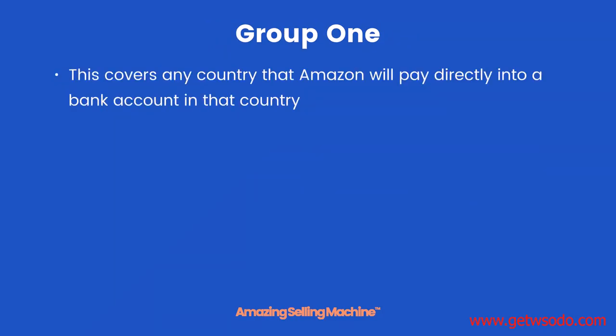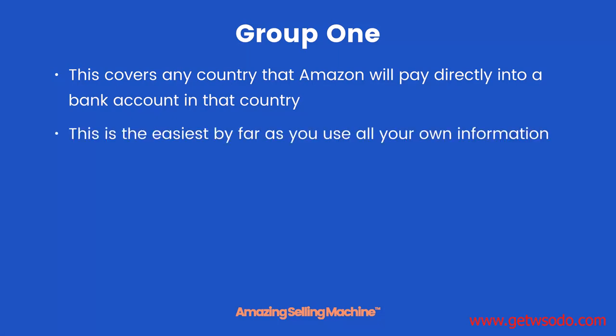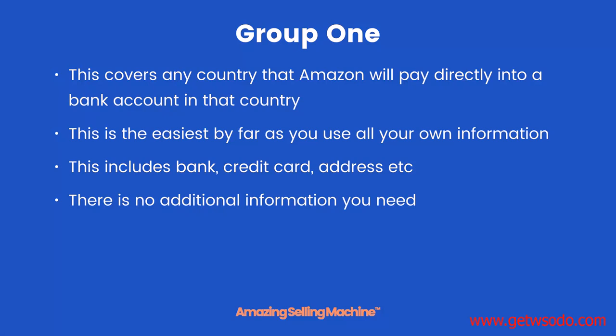Group one covers any country that Amazon will pay directly into a bank account in that country. For the most part it's the US, Canada, most countries in the eurozone, and a few extra ones — all listed in the download below this video. This is the easiest option by far, as you can use all your own information — your bank details, credit card, address, and so on — because Amazon will send the money directly to your local bank account. No additional services are needed.